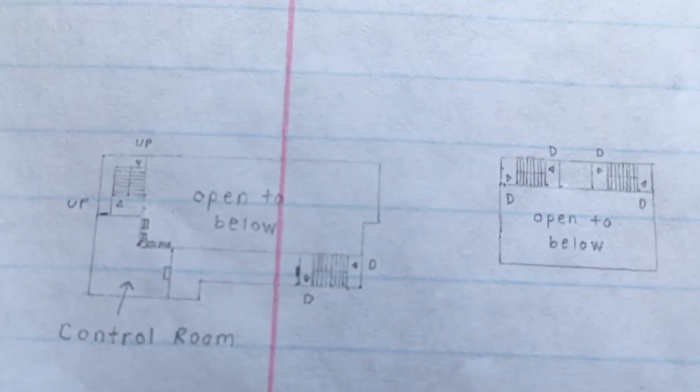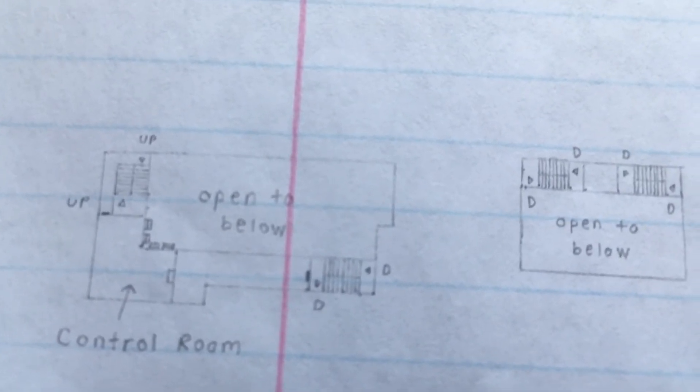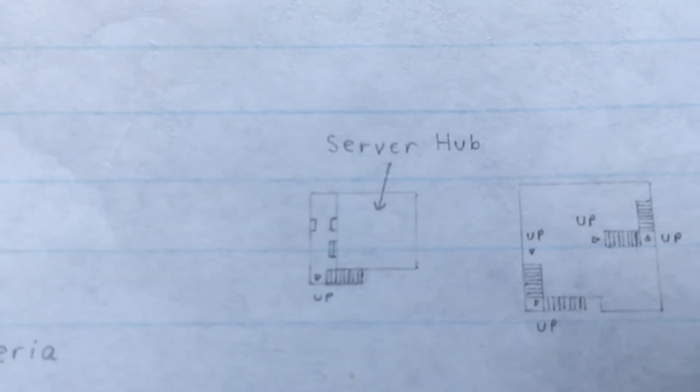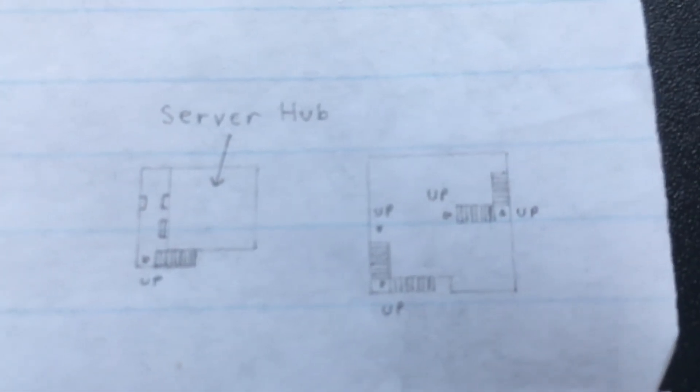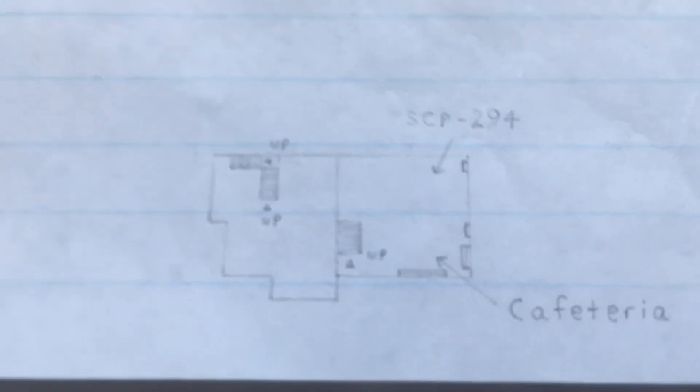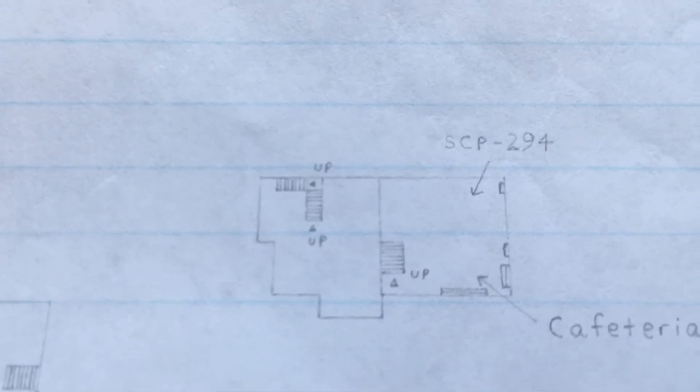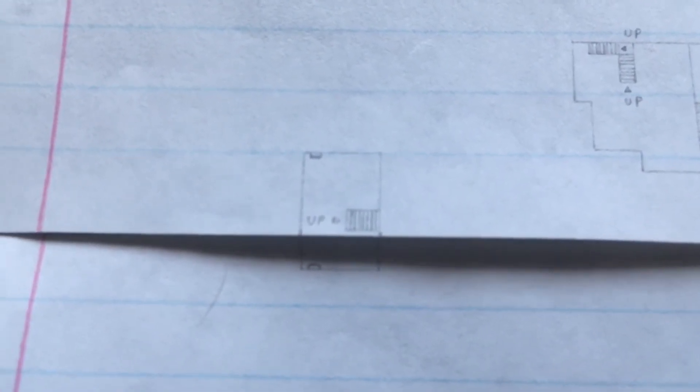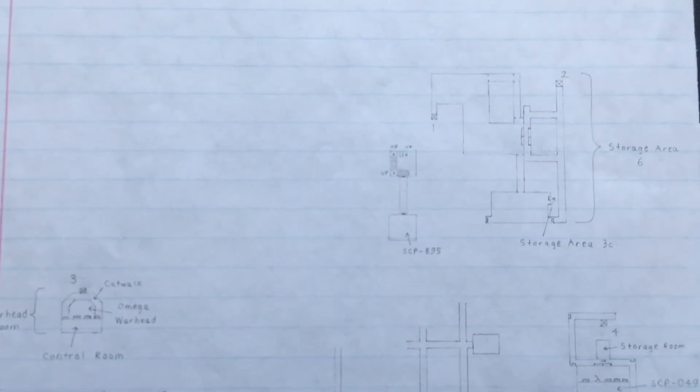You have the control room for 106, and the actual chamber is still one more floor down. Same with 682's chamber. Here's the server hub for entrance zone, and just another kind of area in the entrance zone. Here's the cafeteria with SCP-294. And also 066 usually hangs around this spot. Another kind of office, really. That's pretty much it for that.